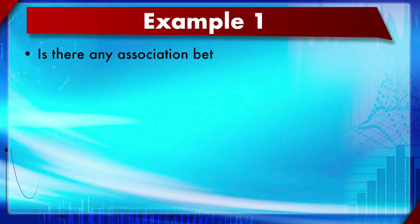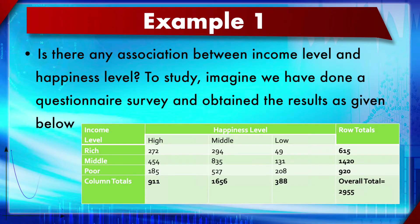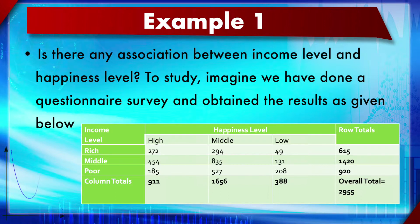Let us look at an example: is there an association between income level and happiness level? Whether people get happier when their income level increases. Income and happiness are categorical variables, so Pearson's chi-square test of independence is used. Imagine we have done a questionnaire survey and obtained the results in the table below, where happiness level is the column and income level is the row. These numbers are the exact observed frequencies — FO or observed cell counts.